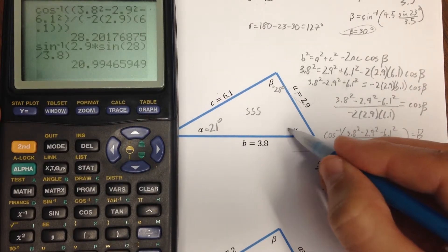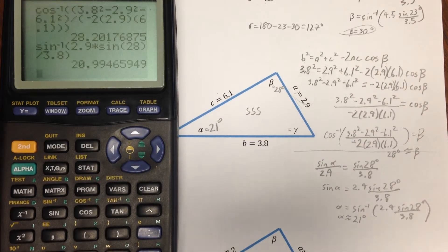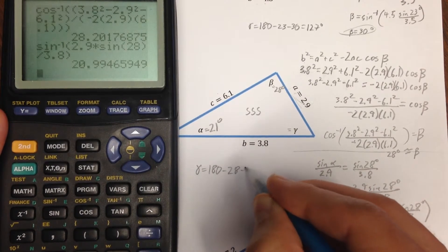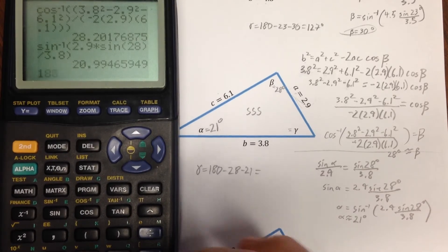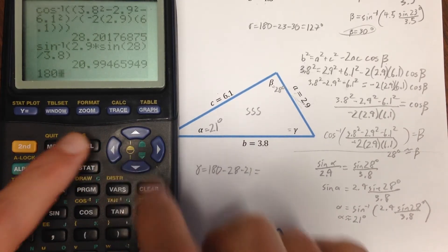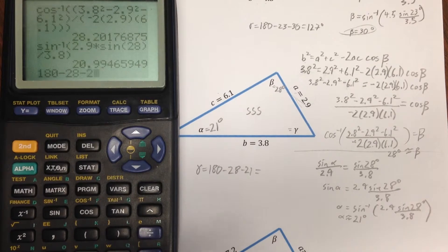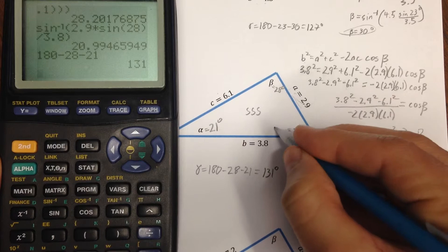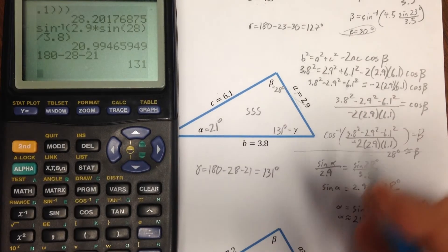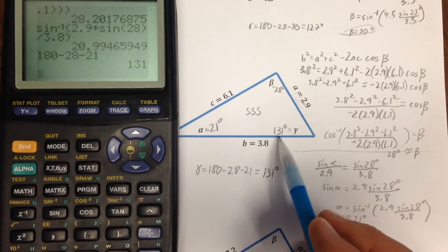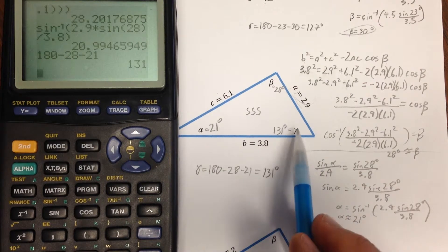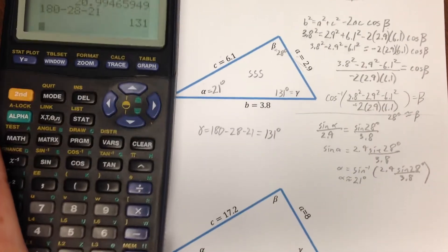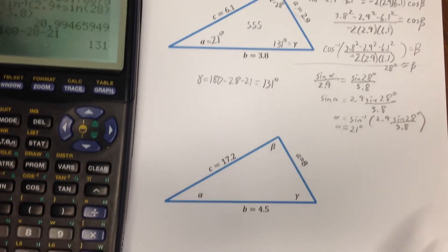Notice what would have happened if I would have solved for gamma. Now, I happen to know that gamma equals 180 minus 28 minus 21 or 131 degrees. Sine inverse can't output 131. So, I wouldn't have gotten the right angle here had I used law of sines to find gamma because it's opposite the largest side. But, I've solved that triangle first using law of cosines, then using law of sines.